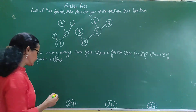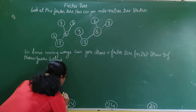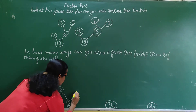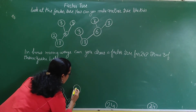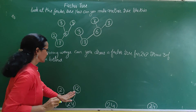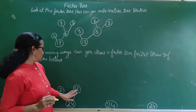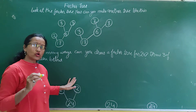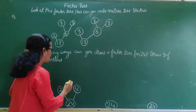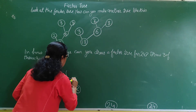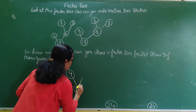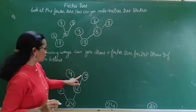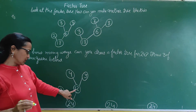2 twelves are 24. So right here we write 2 and 12. Now we can break 12. So 4 threes are 12. So right here write 4 and 3. 4 threes are 12.